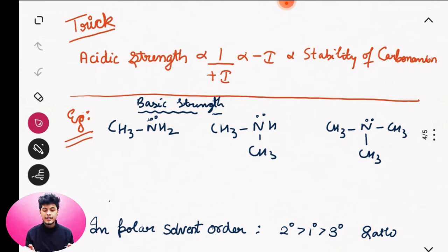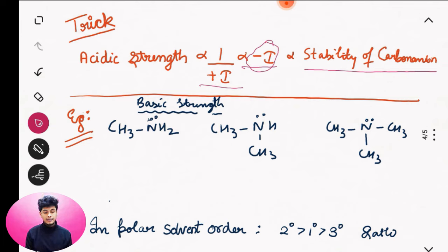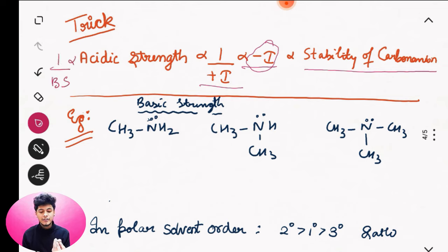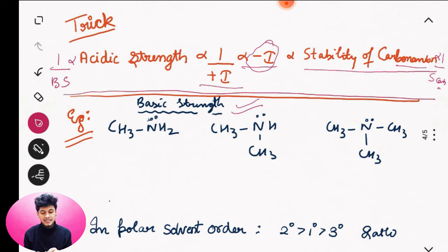The trick you were waiting for: Acidic strength is inversely proportional to Plus-I group and directly proportional to Minus-I group, and directly proportional to stability of carbanion. यानि कि जिसके पास Minus-I ज़्यादा होगा उसकी acidic strength ज़्यादा होगी। Basic strength = 1/acidic strength, and stability of carbocation = 1/acidic strength — it will be the opposite.